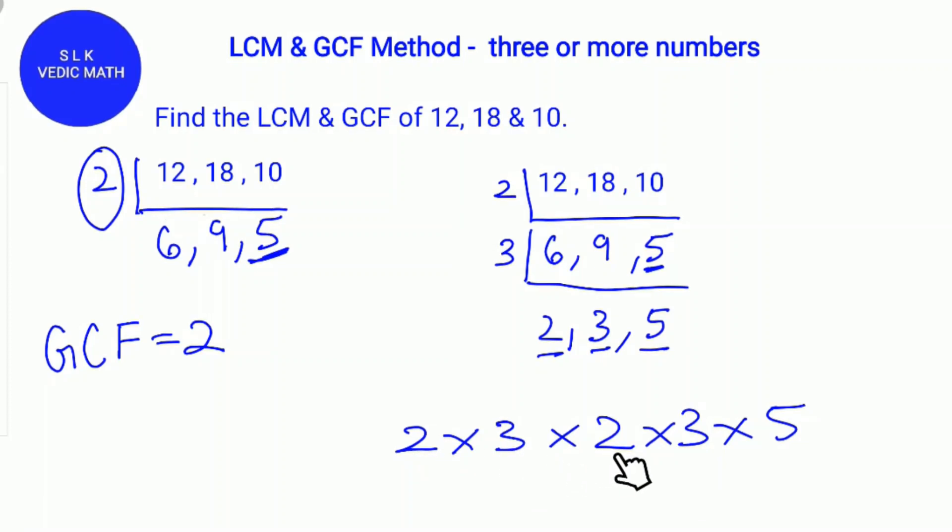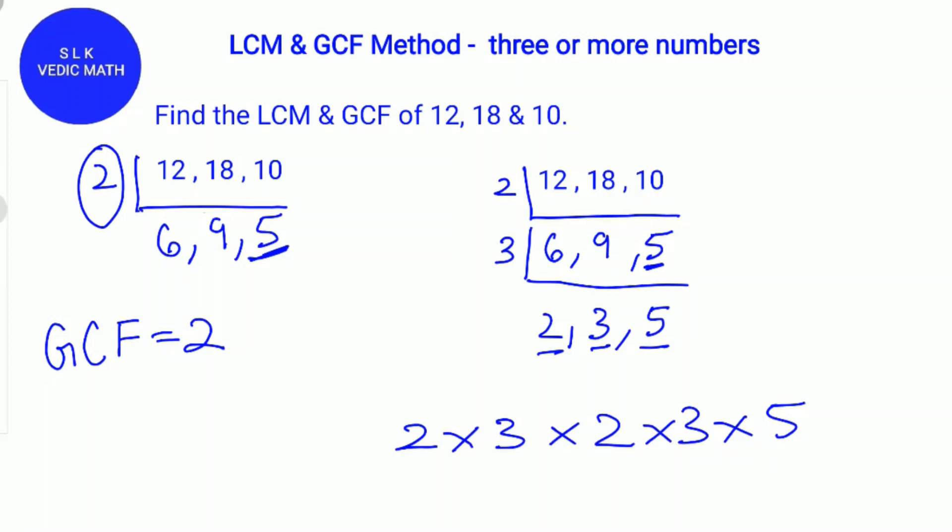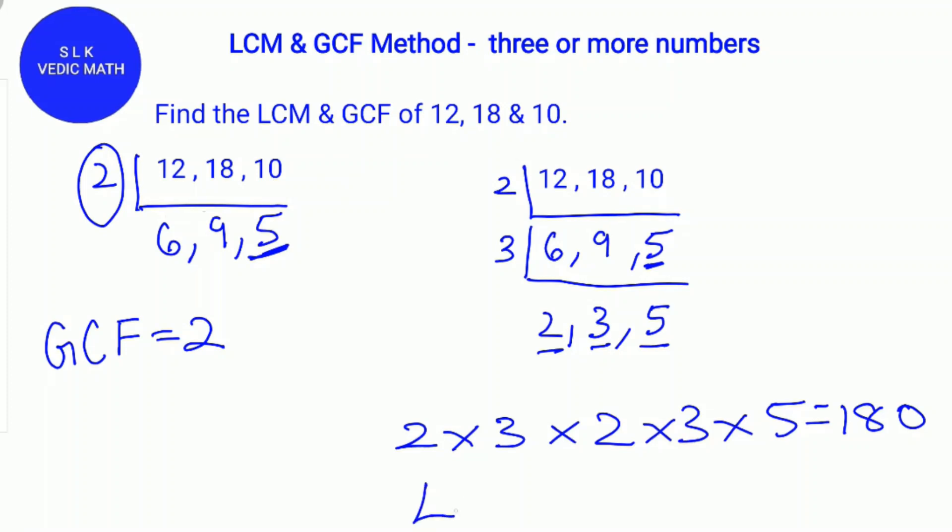6 times 2 is 12, and 12 times 3 is 36, and 36 times 5 is 180. So, the LCM will be 180.